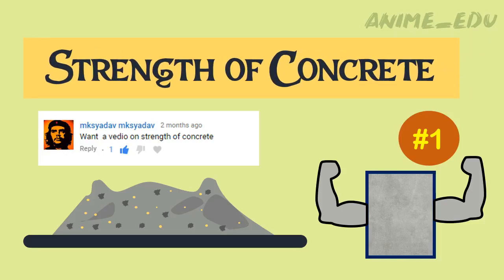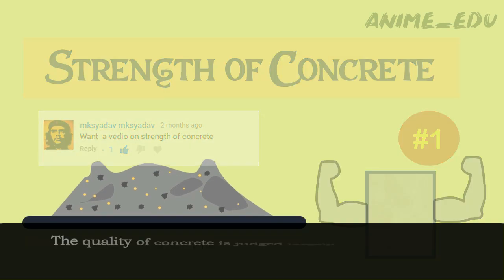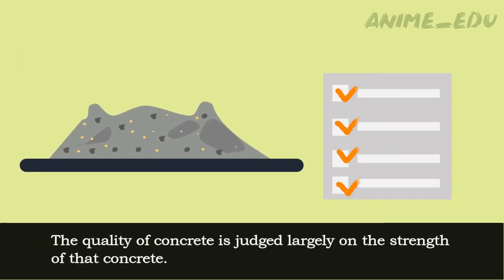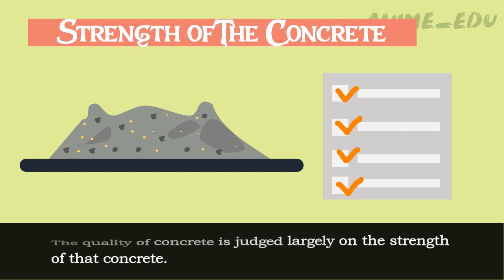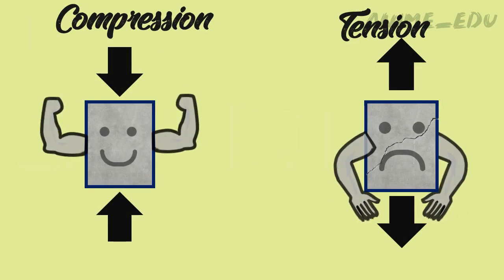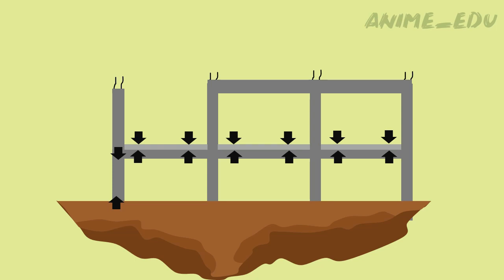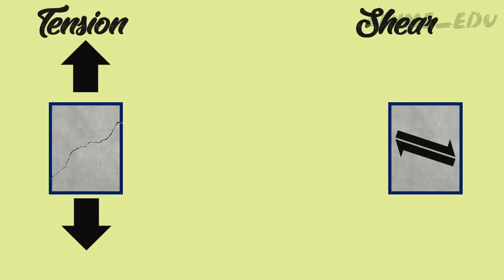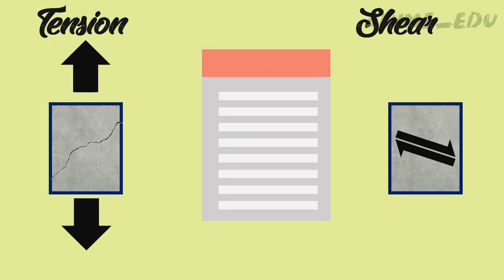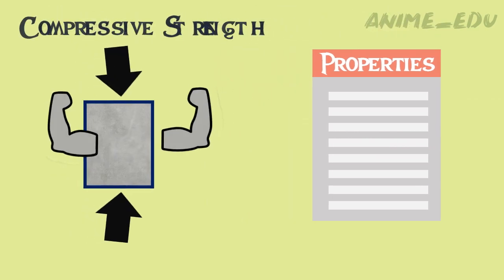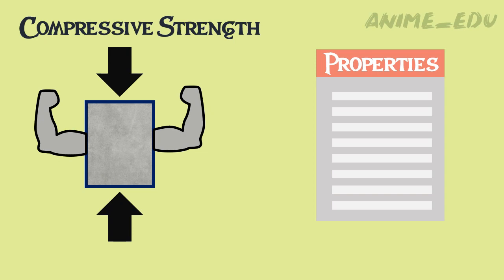The quality of concrete is judged largely on the strength of that concrete. Concrete is strong in compression but weak in tension. In most structural applications, concrete is employed primarily to resist compressive stresses. In cases of concrete in tension or shear, the compressive strength is frequently used to measure these properties. Thus, the compressive strength of concrete is used as a qualitative measure for the various properties of hardened concrete.